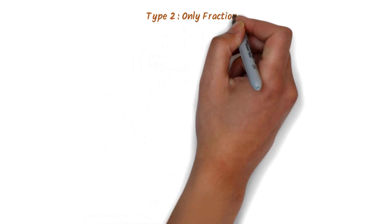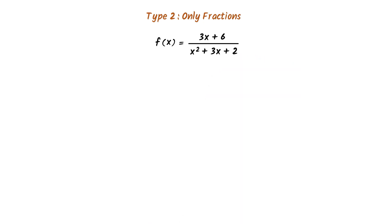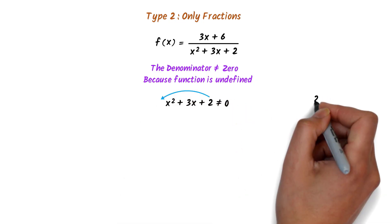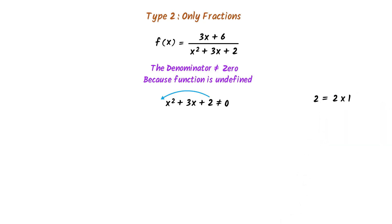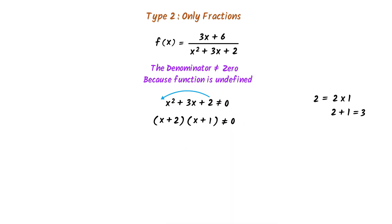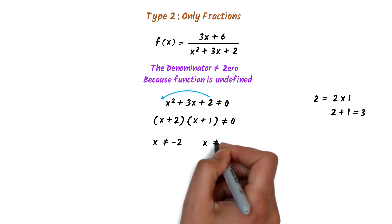Now let me teach you the second type of problems, which we call only fractions. For example, f(x) = (3x + 6) / (x² + 3x + 2). In this case, the denominator should not be equal to 0, because the function will then be undefined. The denominator is x² + 3x + 2 and it must not equal 0. I solve this using factorization: since 2 × 1 = 2 and 2 + 1 = 3, I write (x + 2)(x + 1) ≠ 0. We get x ≠ -2 or x ≠ -1.